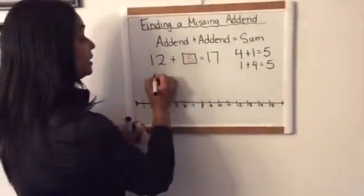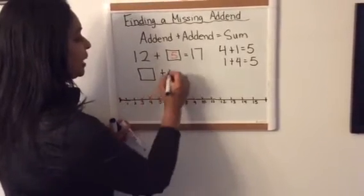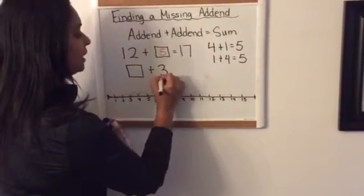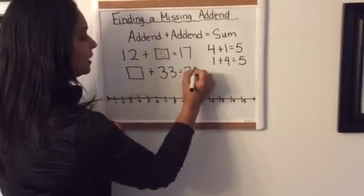We'll do an example of even higher numbers. This time I'm going to have the first addend missing. Something plus 33 equals 36.